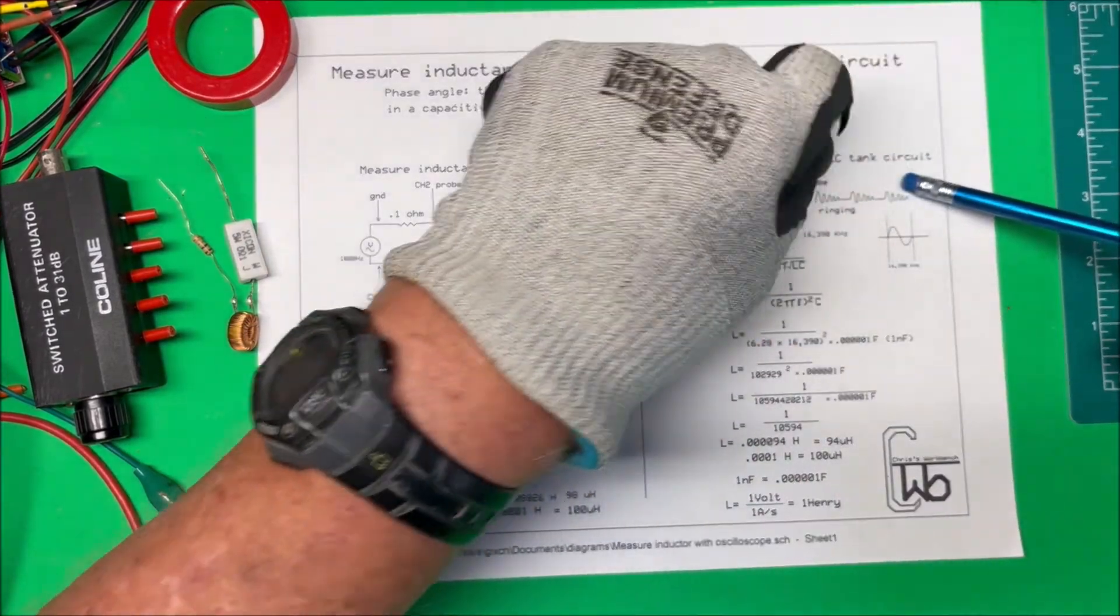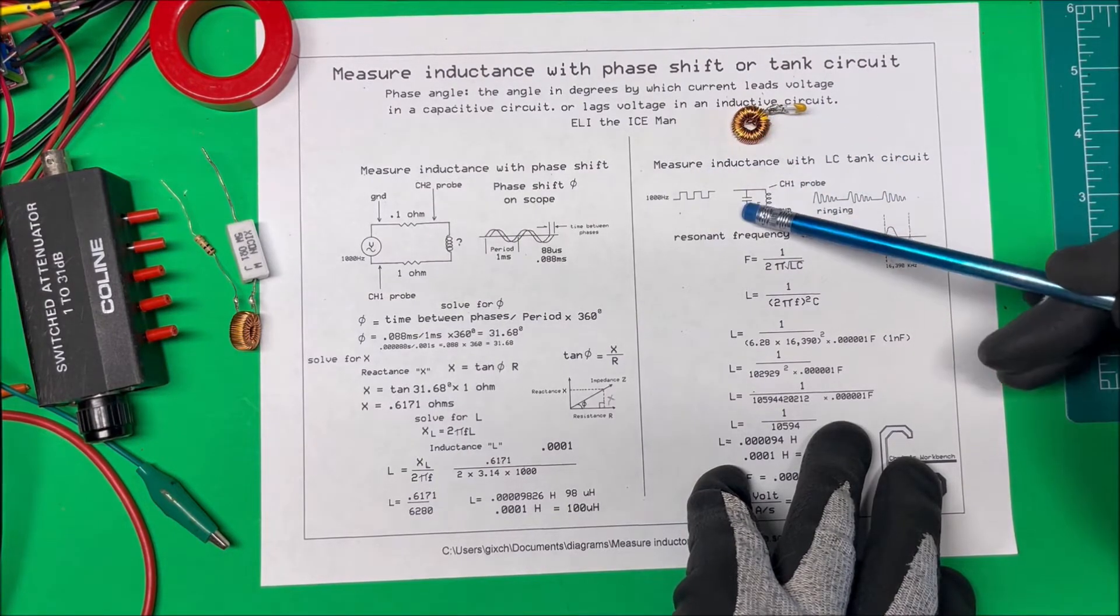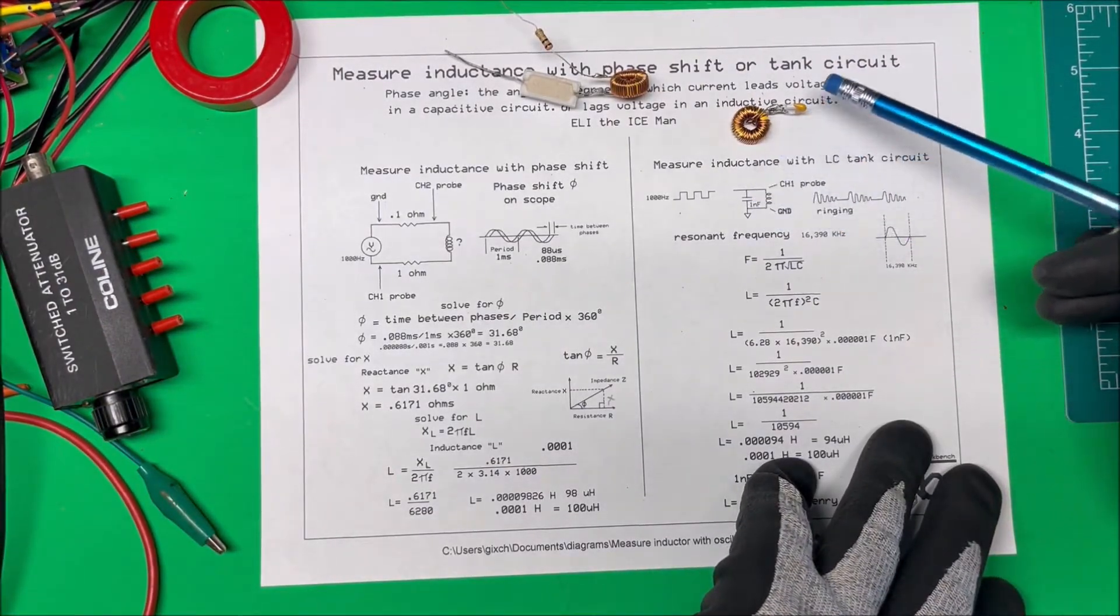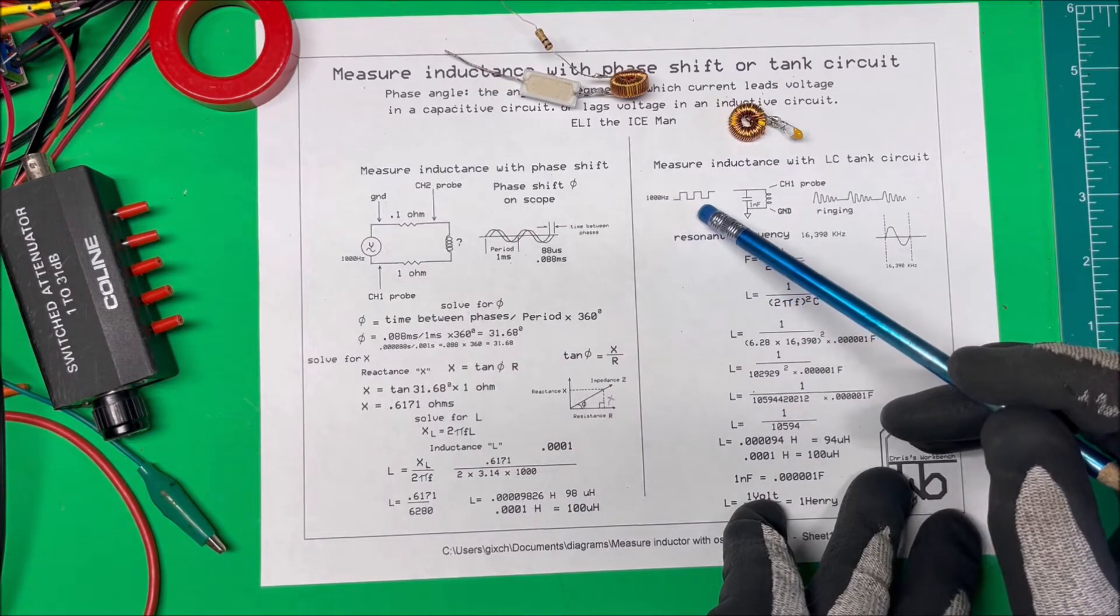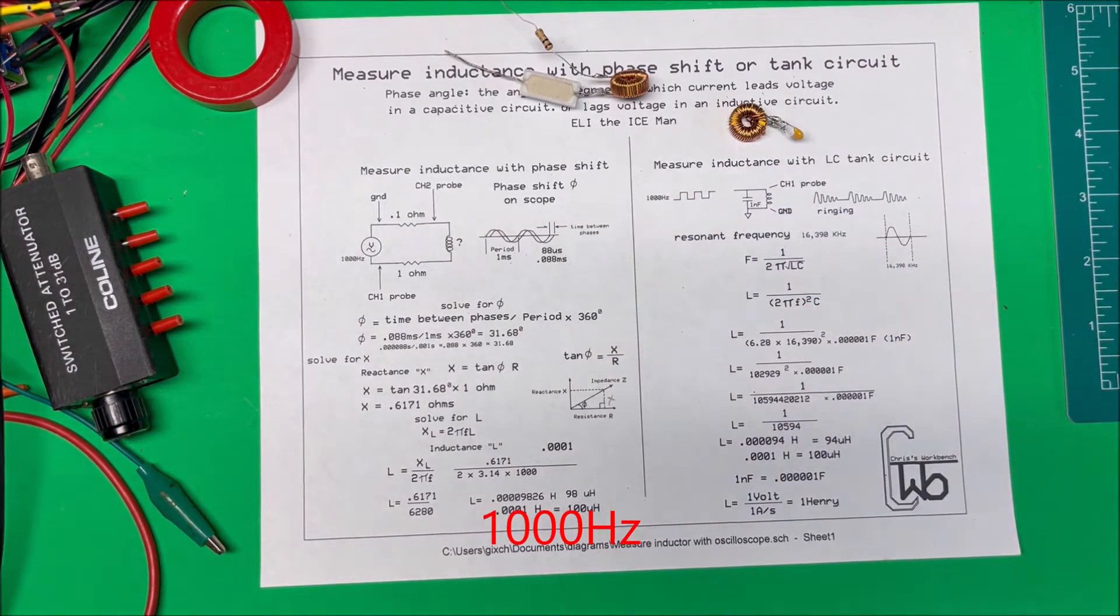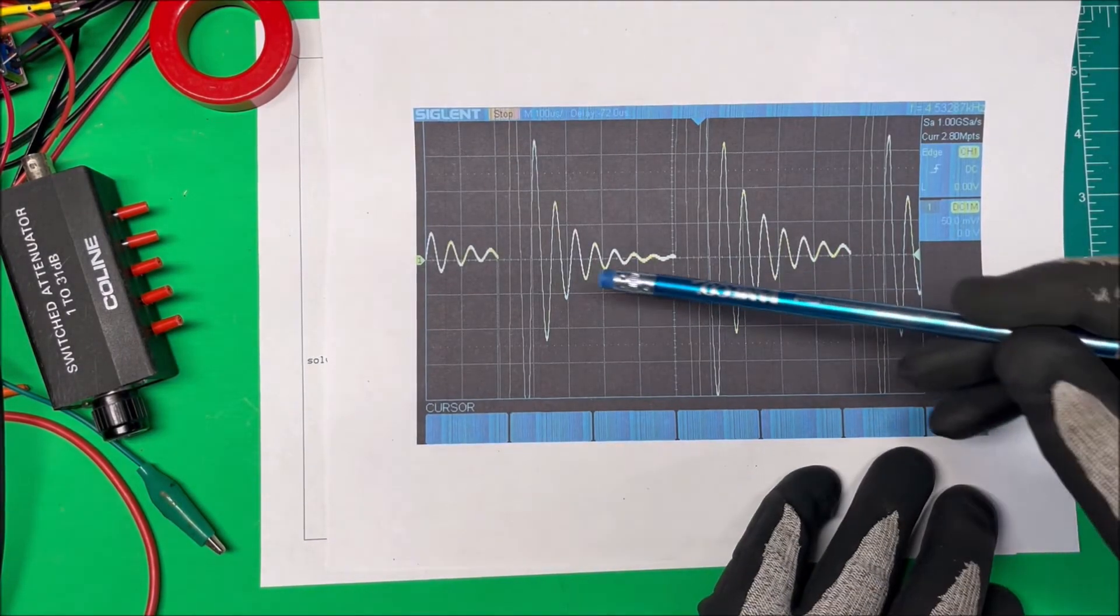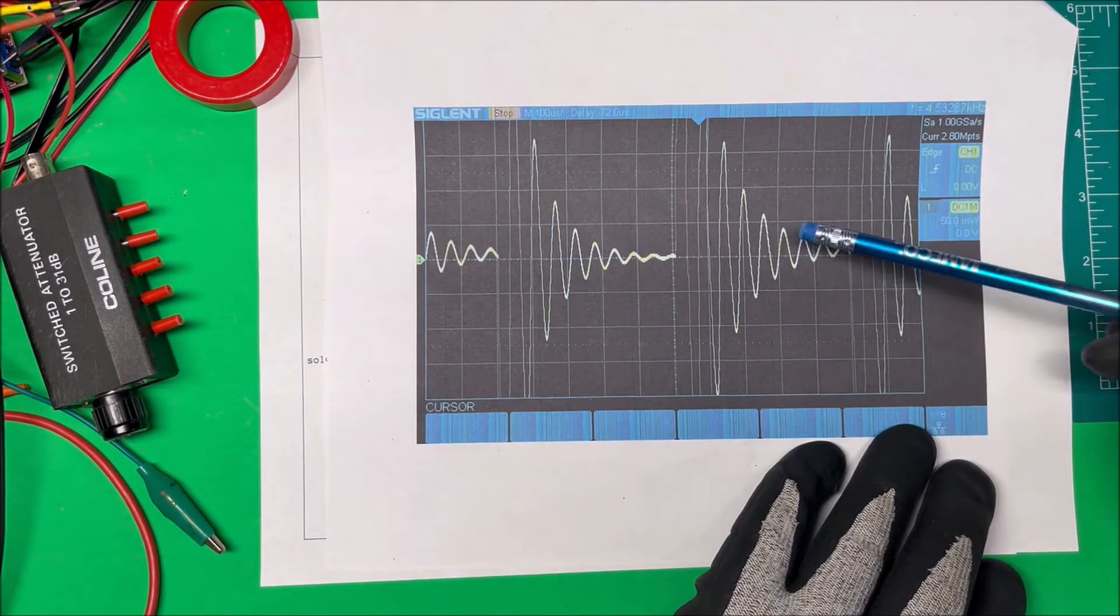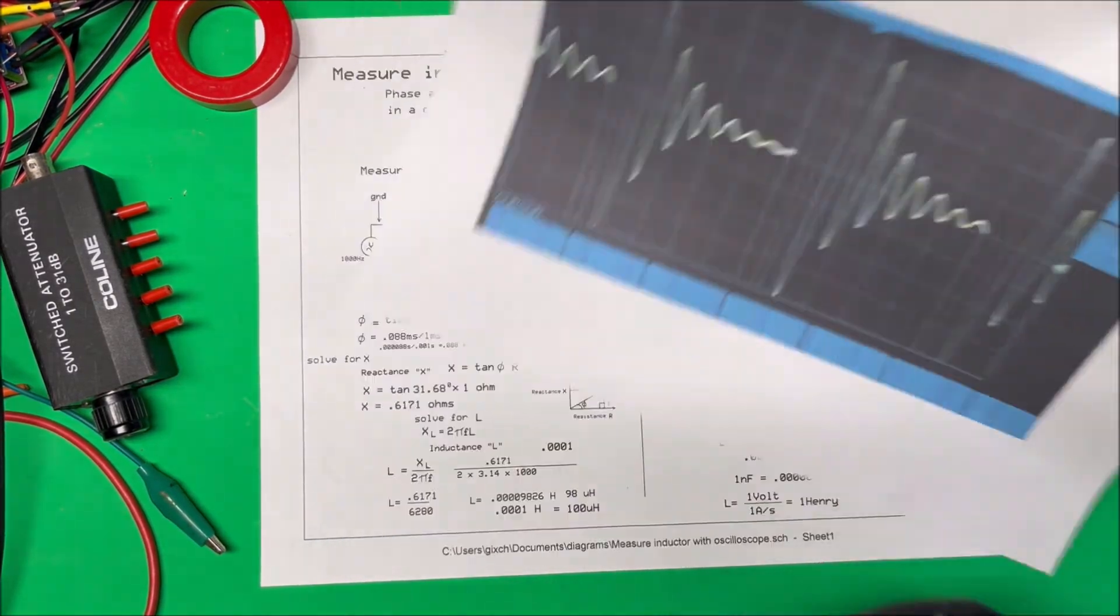Now we're going to try it with the LC tank circuit. Here it is. It's just my inductor, not the same one but out of the same batch, and a one nanofarad capacitor. I'm going to put a square wave into this, 100 Hertz square wave. When you do that on the scope, you'll get a ringing like this every time the square wave goes up. We're going to determine the frequency of this ringing, and that's going to give us our inductance.